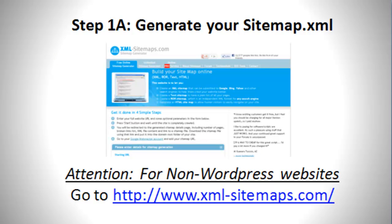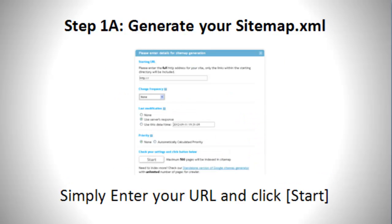Step 1a: Generate your sitemap.xml. This is for non-WordPress websites. Go to xml-sitemaps.com — very simple instructions. All you really need to do is enter your URL and press Start.